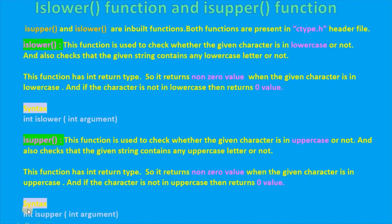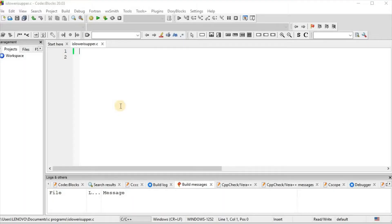Syntax for isUpper function: int isUpper(int argument).